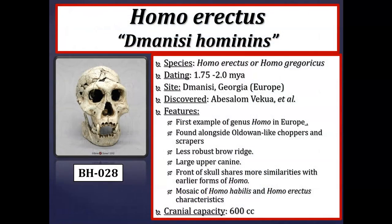This summary slide covers the key information for the Dmanisi fossil. The species is generally considered Homo erectus, dating between 1.75 to 2 million years ago, from the site of Dmanisi, Georgia — at the gates of Europe. It is the first example of genus Homo out of Africa. Found alongside basic Oldowan-like choppers and scrapers, the brow ridge is slightly less robust than other Homo erectus, and the canine slightly larger. Overall, these fossils show a mosaic — a mixture of Homo habilis and Homo erectus features, meaning a mix of derived and primitive traits.